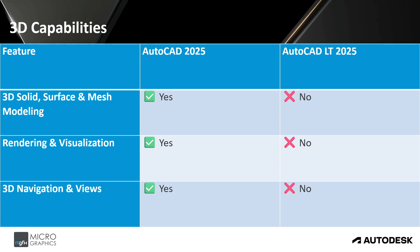For 3D capabilities, the full version supports 3D solid, surface, and mesh modeling, rendering and visualization, and 3D navigation and views. However, AutoCAD LT does not have any of these capabilities.